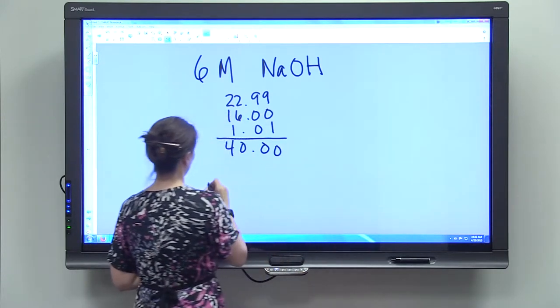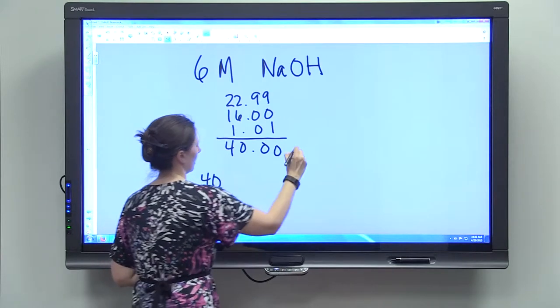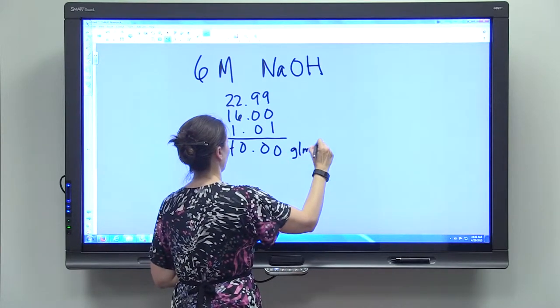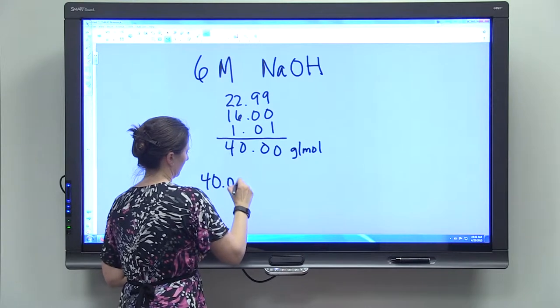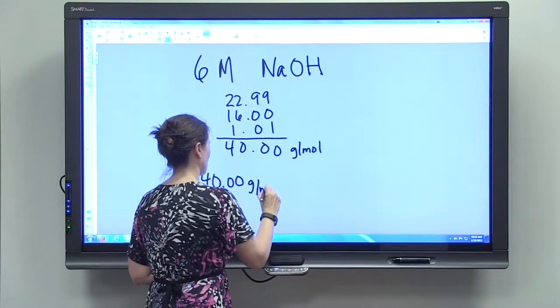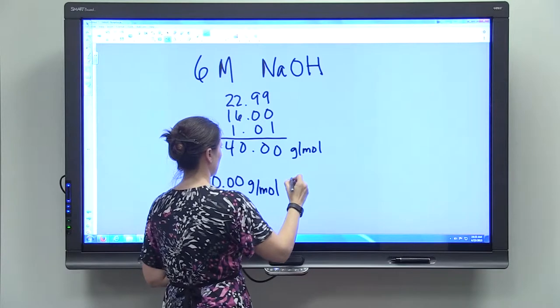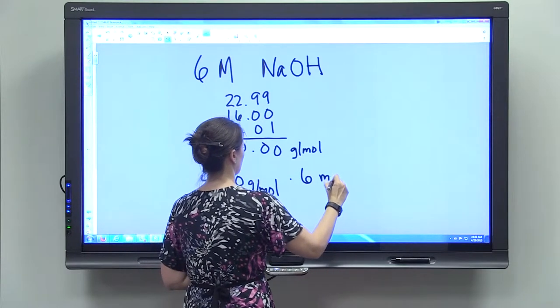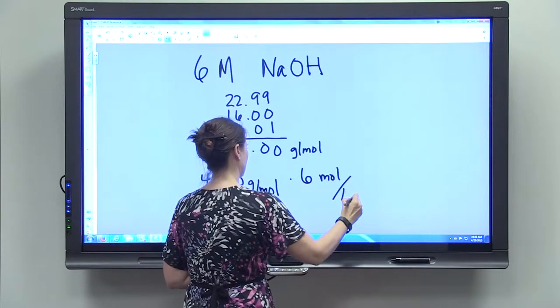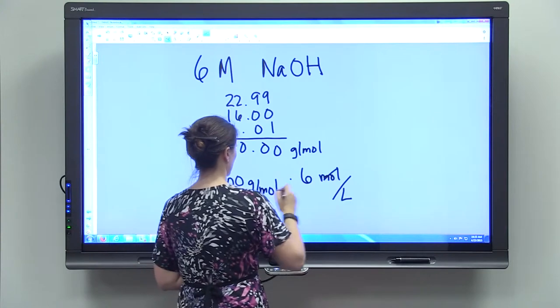So 6 molar. You have 40, and again that's grams per mole. And you want 6 moles per liter. The moles cancel.